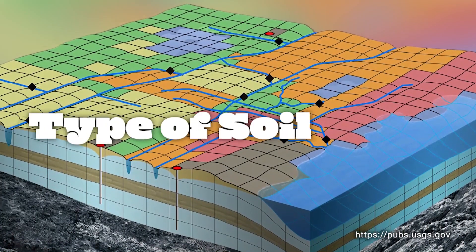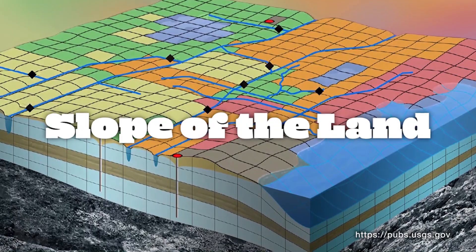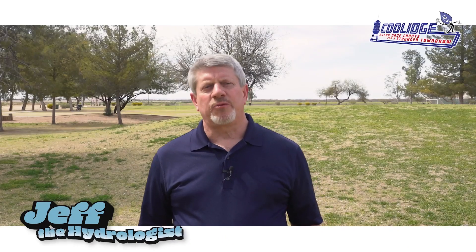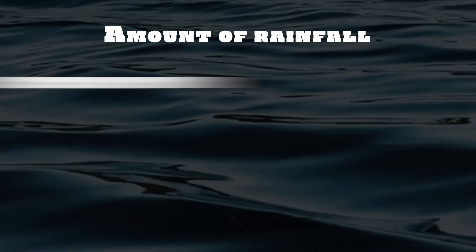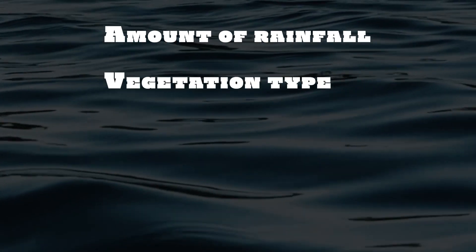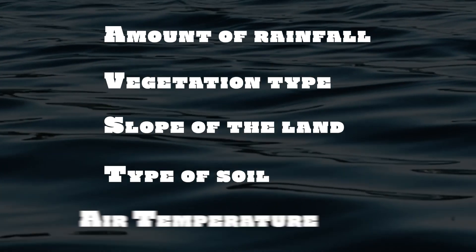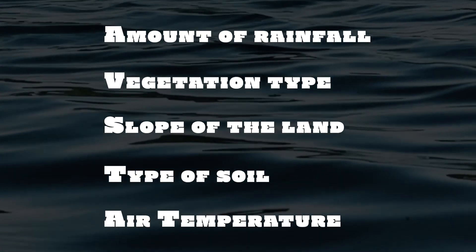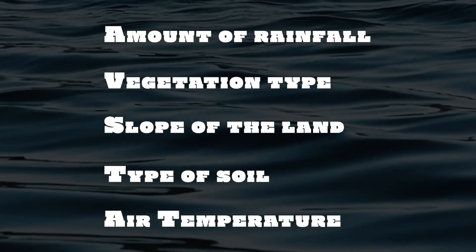These models have inputs that go into the model, which are then used to determine or estimate the amount of infiltration, runoff, and evapotranspiration. Surface water models incorporate several inputs, including the amount of rainfall, vegetation type and amount, the slope of the land, the type of soil, and the air temperature, to estimate the amount of runoff and infiltration that occurs over very large areas.